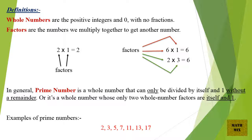Examples of prime numbers: 2, 3, 5, 7, 11, 13, and 17.